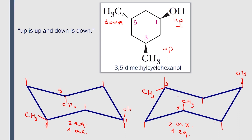The conformation that has a greater number of equatorial groups than the other should be much more stable. In the first chair, the number of equatorial groups is larger, so this is the more stable conformation. The second chair is the less stable conformation.